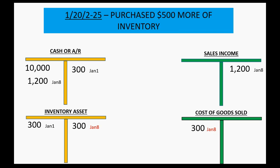Watch another one. On January 20, we purchased $500 more of inventory. Again, that's the easy one. We have $500 more of this asset, and on the other hand, we have $500 less of cash. So we know purchasing under the perpetual system is very easy: debit the inventory that you got, and credit the cash.